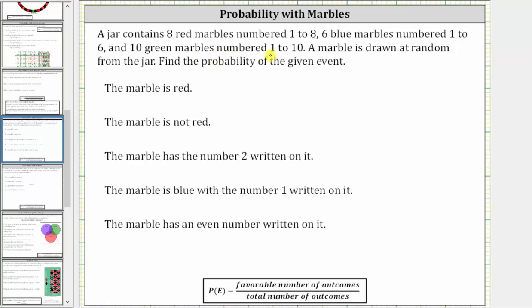A jar contains eight red marbles numbered one to eight, six blue marbles numbered one to six, and ten green marbles numbered one to ten. A marble is drawn at random from the jar. Find the probability of the given event. Before we determine the probabilities, let's model the sample space.